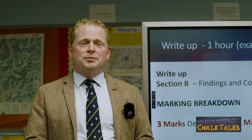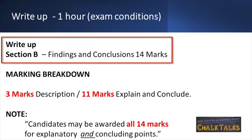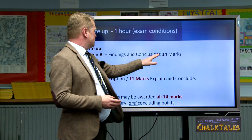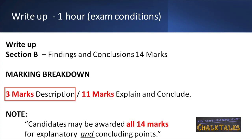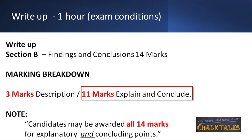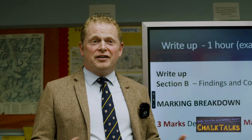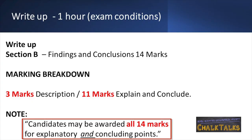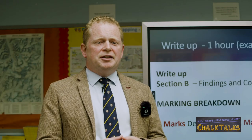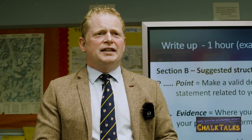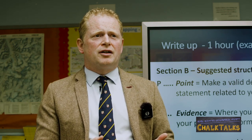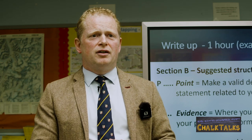Now that Section A is completed, it's time to move on to Section B — time to present your findings, show what you've found out, and make your own descriptions, explanations, and conclusions. This section is worth an overall 14 marks. Three marks of your 14 are available for description, whilst the remaining 11 marks are for explaining and concluding. However, you can of course score all 14 marks through your own explanatory and concluding points. Writing in a clear and structured way helps you keep track of your progress towards covering the findings of your research.